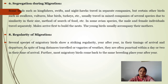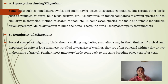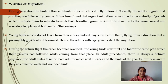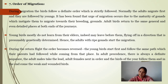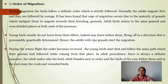Regularity of migration: several species of migratory birds show striking regularity year after year in their timing of arrival and departure. In spite of long distances traveled or vagaries of weather, they are often punctual within a day or two in their time of arrival. Regarding order of migration, during migration birds follow a definite order. Normally the adults migrate first, followed by the young. The urge for migration occurs due to maturity of gonads, and young birds mostly do not learn this from adults — it is instinct.